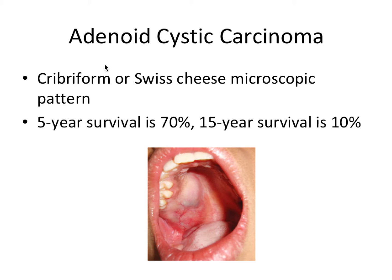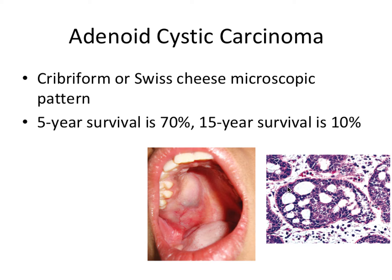Then we have adenoid cystic carcinoma. The most important thing to know is that there's this cribriform, or sometimes called the Swiss cheese, microscopic pattern. Looking at a slide, you can see these empty spaces chewed out from the sample — this is the Swiss cheese microscopic pattern. Adenoid cystic carcinoma can also affect breast tissue, where it looks very similar histologically and has the same cribriform or Swiss cheese microscopic pattern, which is the most important thing to know for the board exams.